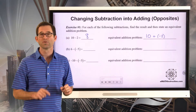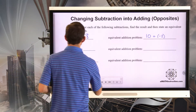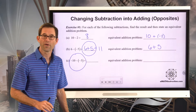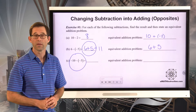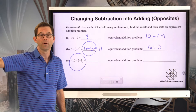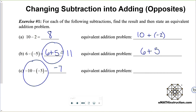B and C are really what we were just talking about: if I subtract a negative, then I end up adding the opposite. So 6 minus negative 5 is the same as 6 plus 5, which is 11 — and that's the equivalent addition problem. Now here, if I have something like negative 10 minus negative 3, you can think of it as: I've got 10 negative 1's and I take 3 of them away, so I have 7 negatives left.